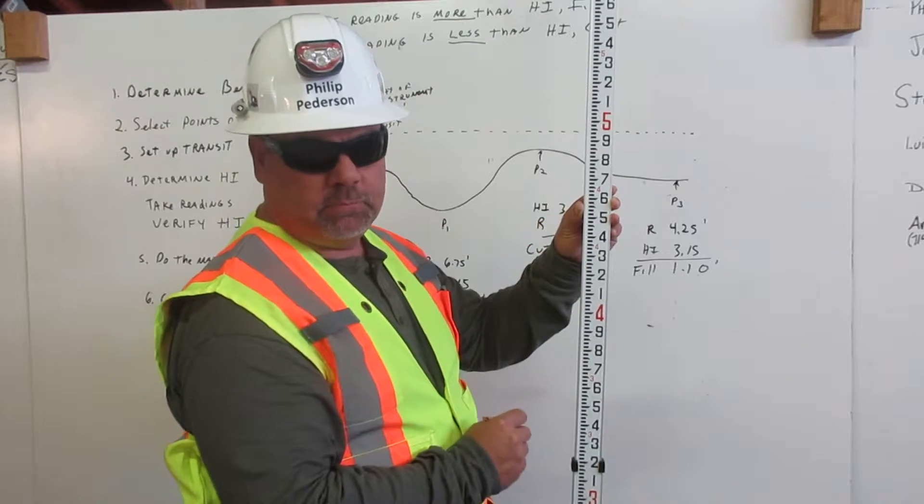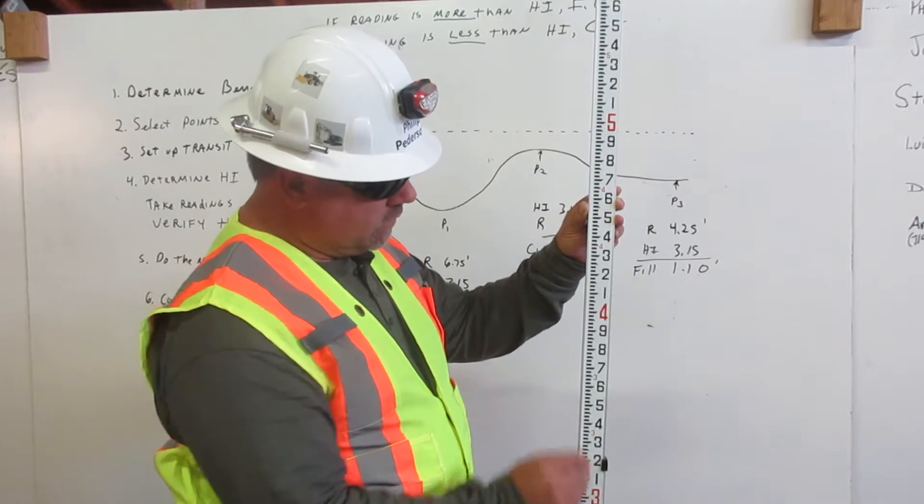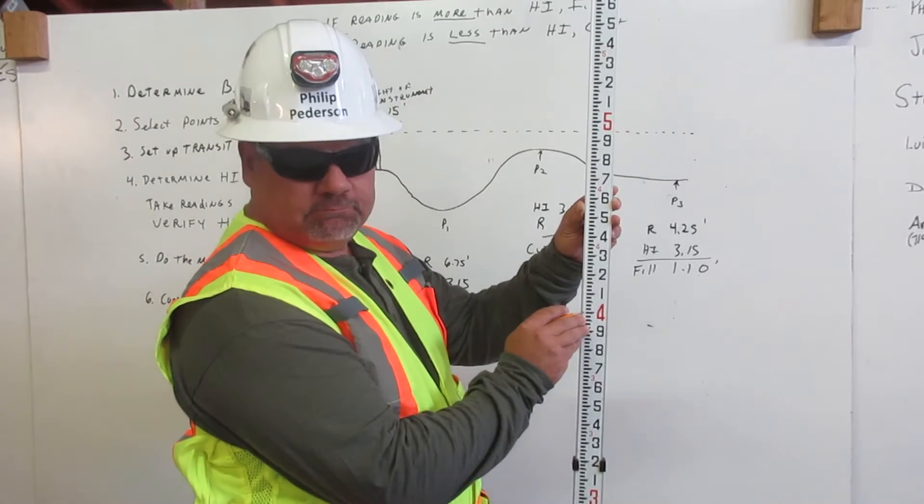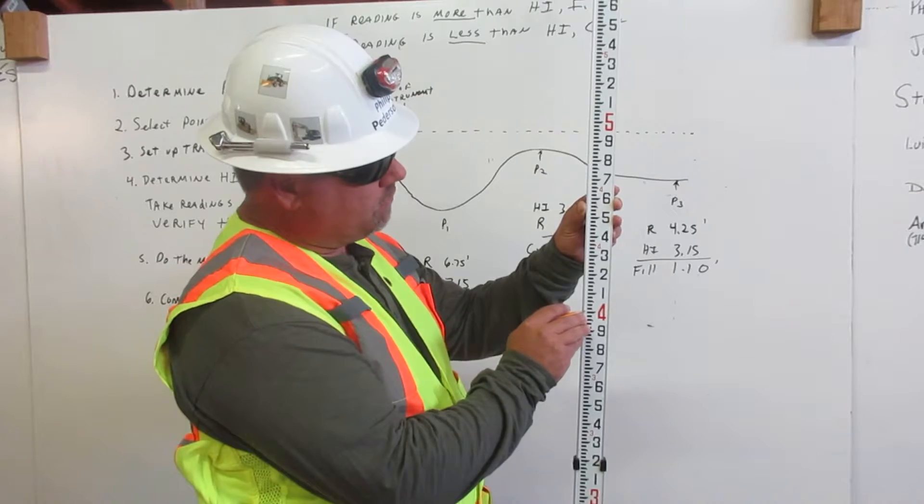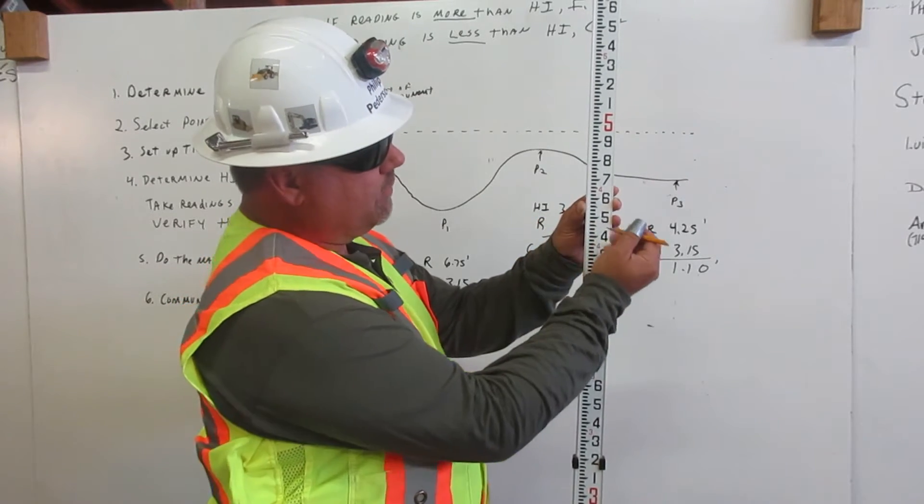To find 4.57 feet on the engineer's rule, first we go to four feet, next we go up to the five. This represents 50. Then we count up seven.